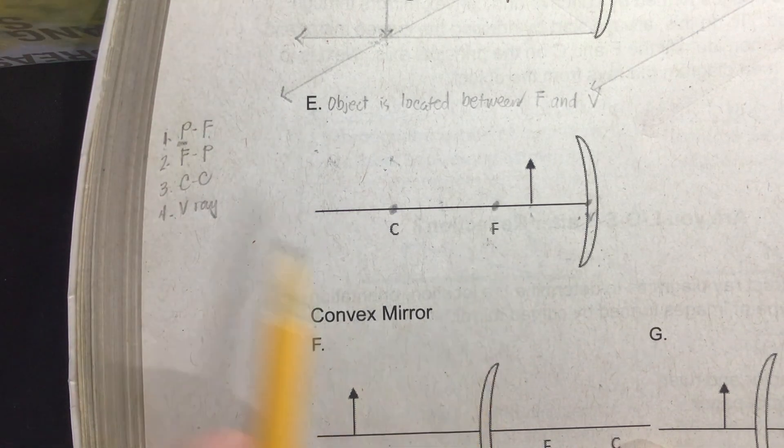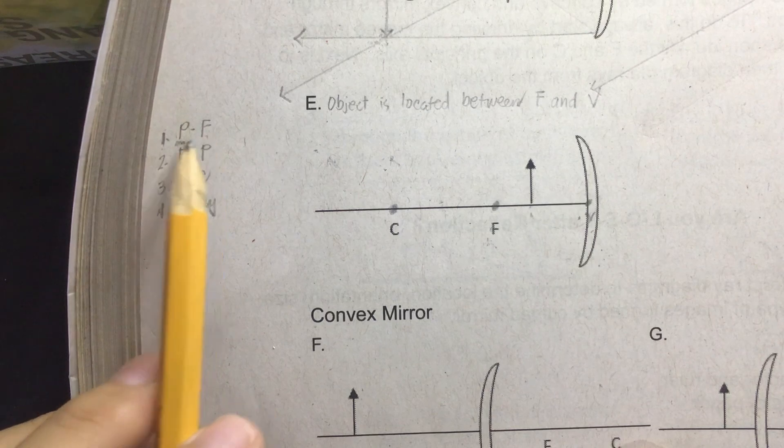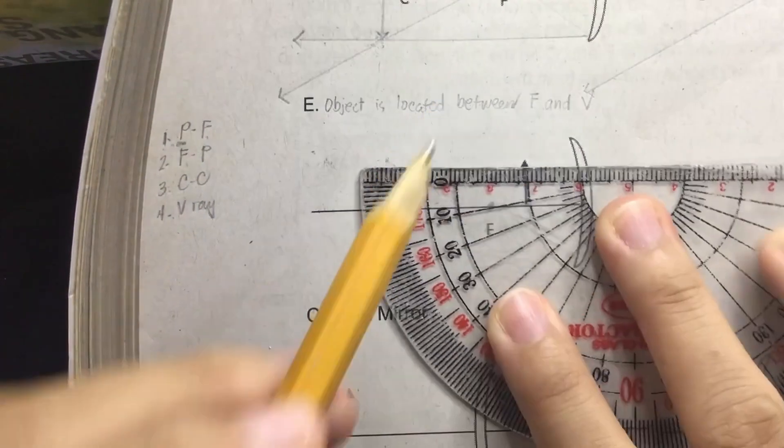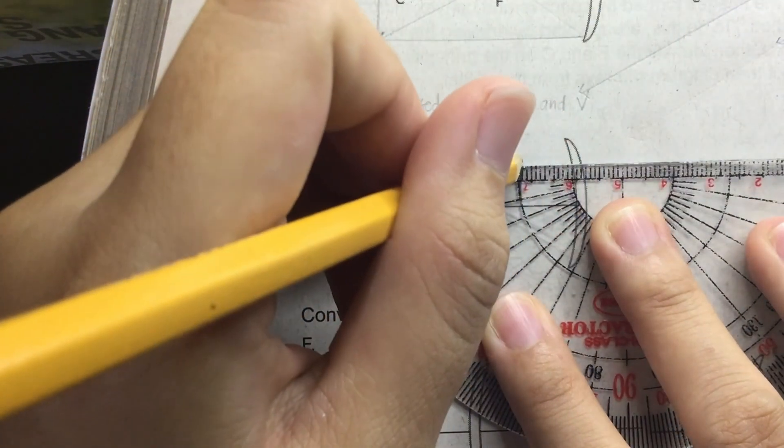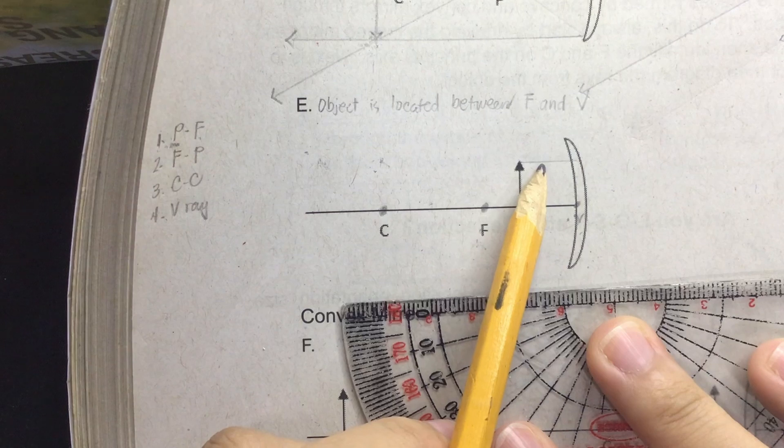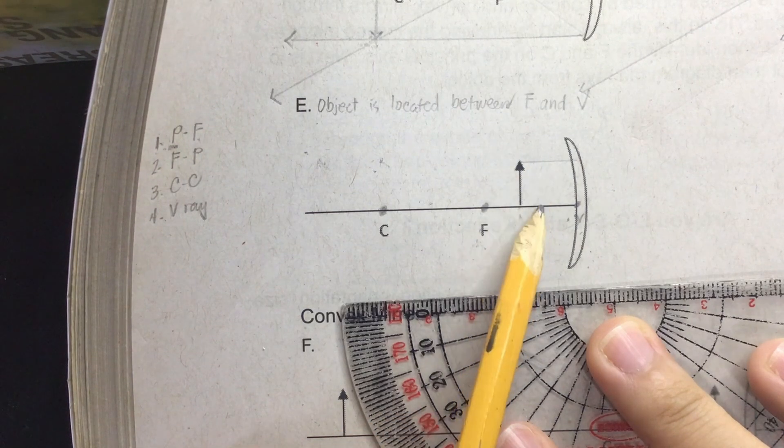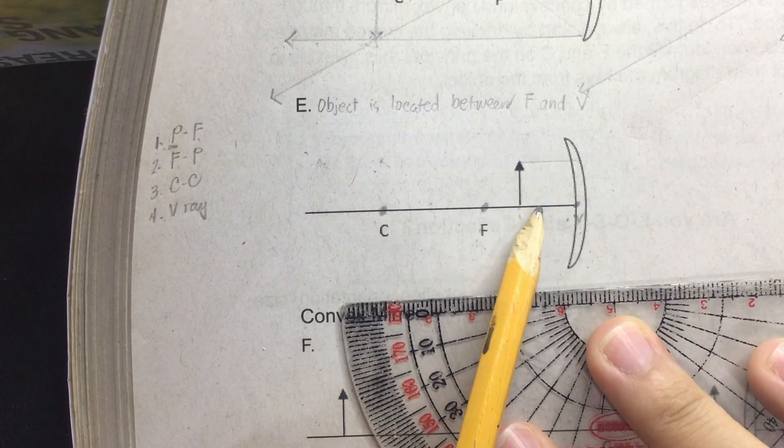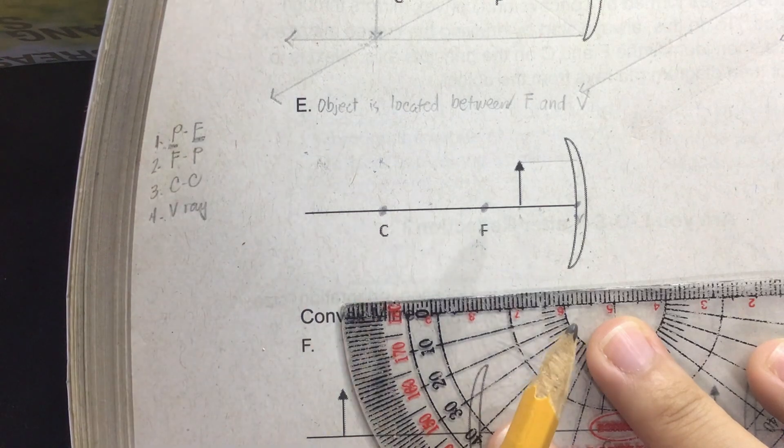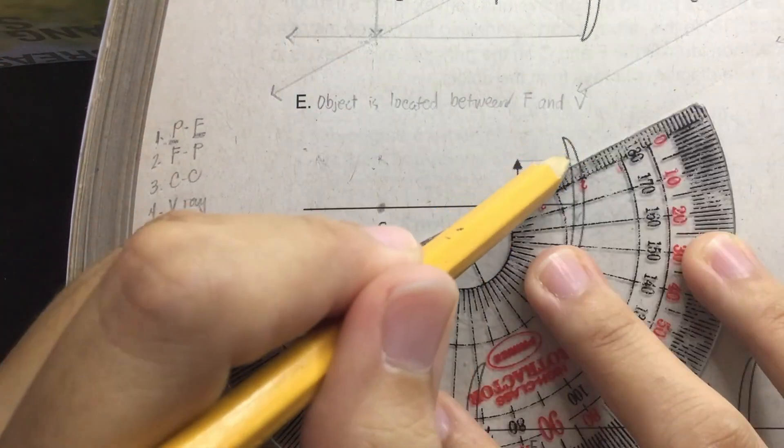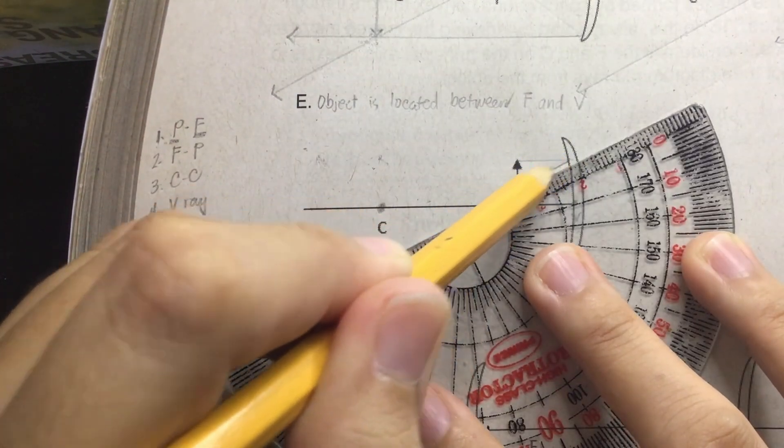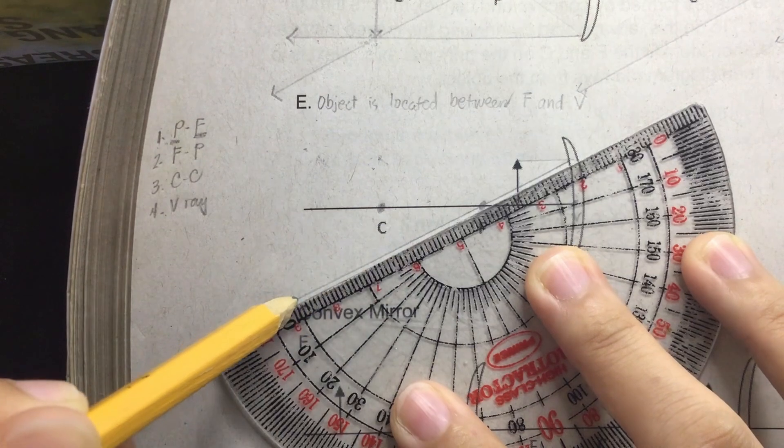First we need to draw the P-F ray. P is a ray of light parallel to the principal axis. P is just a horizontal line parallel to the principal axis. Next we need to have the reflected ray called F ray, reflected passing through the focal point. So this is our P-F ray.